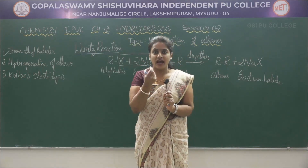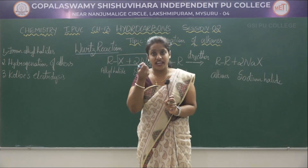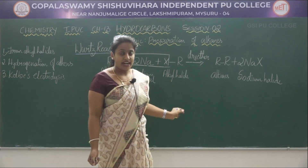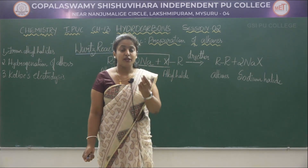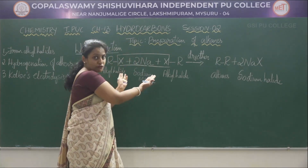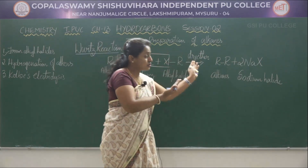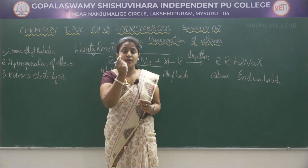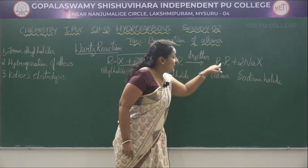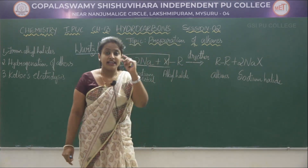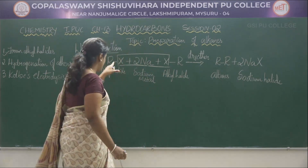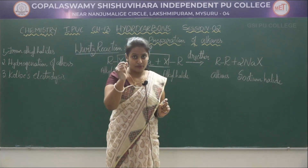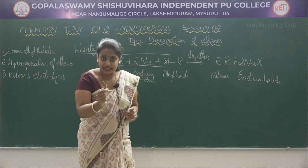For the examination, if asked to explain Wurtz's reaction, you should write the general reaction followed by an example, and mainly explain what is happening: the two moles of alkyl halides reacting with sodium metal in the presence of dry ether give higher alkanes with sodium halide as the byproduct. You should write the name of each and every reactant and product.